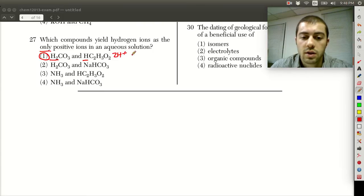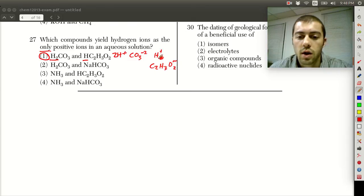We can have 2H+ and then CO3 2-. And we can have H+ and C2H3O2-. So H+, H+, they're the only positive ions here. These two ions are negative.